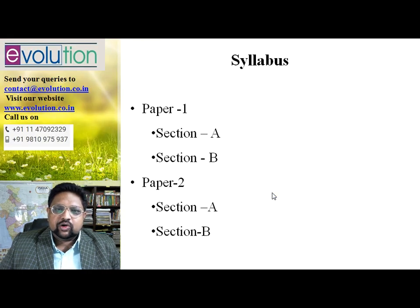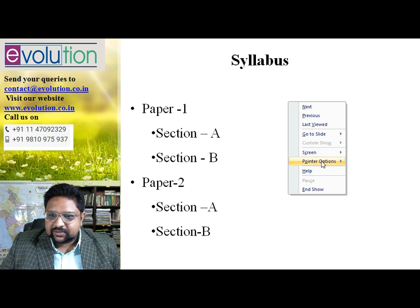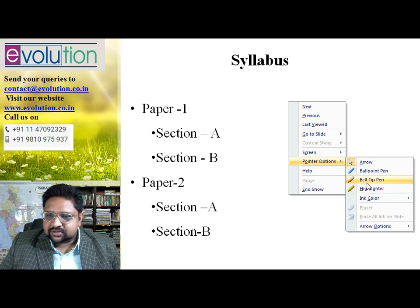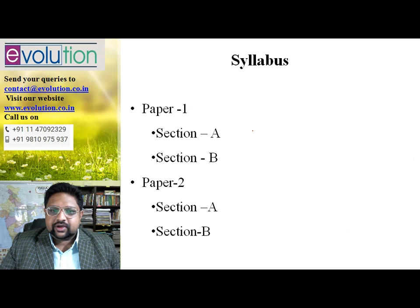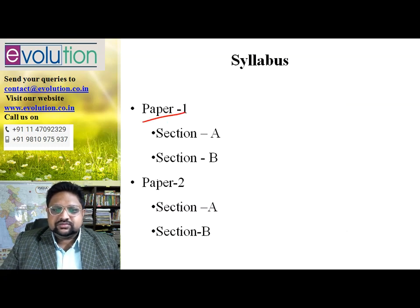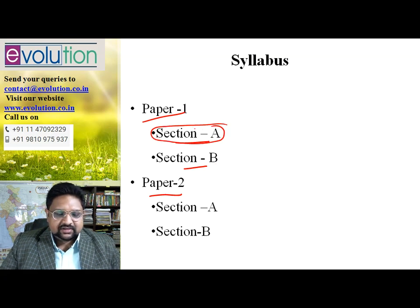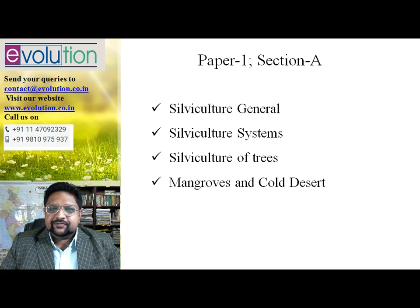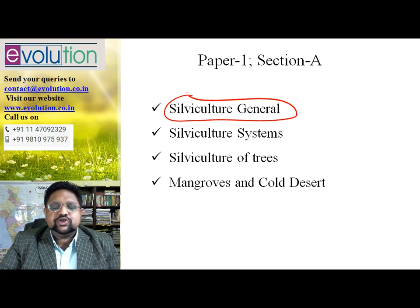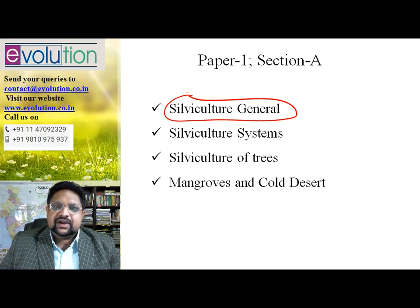Let me go to my pointer to give you an overall clear idea. As you know, there are two papers — section A and section B — and in both papers I have discussed the marks which will be allotted. We started with section A, and in section A we have completed silviculture general: the general aspects, the important topics you should concentrate on, the different kinds of questions asked, and how many marks were allotted in the previous 10 years.